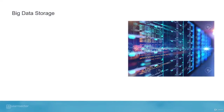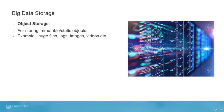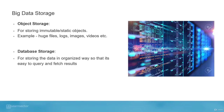When we talk about big data storage, we generally talk about two types of storage. Object storage is for storing immutable static objects — huge files, logs, images, videos, etc. The second type is database storage, which stores data in an organized way for easy querying and analysis. Database storage has two sub-types: relational databases and non-relational databases, also called NoSQL databases.